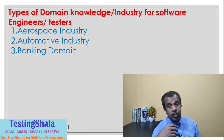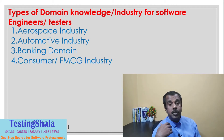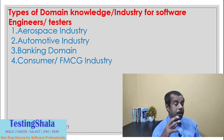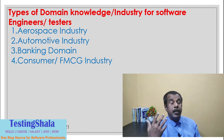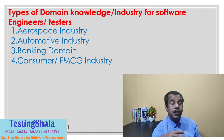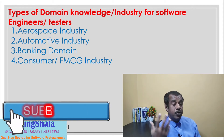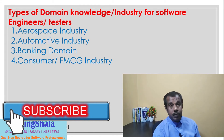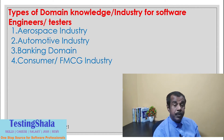The fourth is the consumer and FMCG industry — Fast Moving Consumer Goods. All retail sectors and retail products come into picture here. Manufacturers and sellers require a lot of software, and this is an industry where software companies focus on implementing solutions for manufacturers in the retail and FMCG sector.